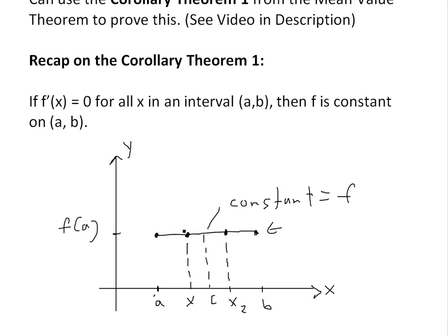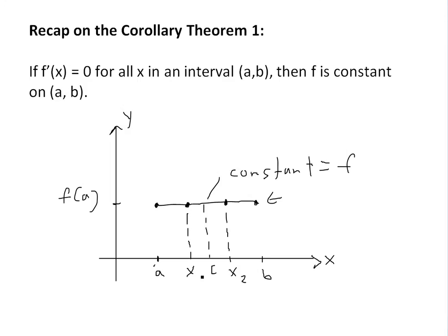Basically, if the derivative is 0, this means the slope is 0, which means the function is constant. So f(a) is going to equal f(b), and anywhere in between—at x₁, x₂, it doesn't matter—it's all the same.